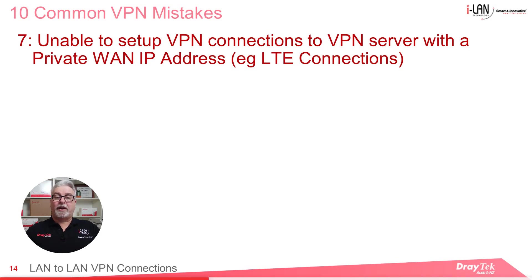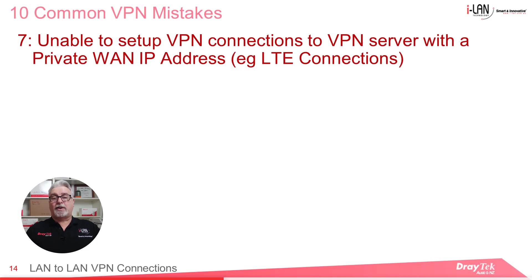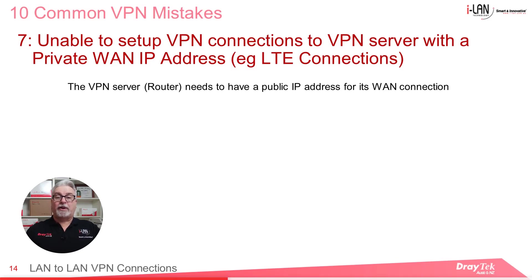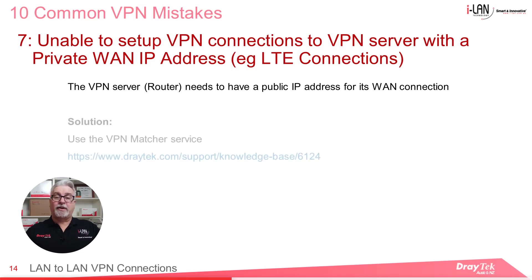Another common issue is that VPN connections cannot be made to a VPN server which has a private WAN IP address. This can be the case when using 3G or 4G LTE connections to the router. LTE ISPs will usually allocate a private IP address for this type of connection. Private IP addresses are not routable over the internet, so the VPN client will not be able to find a path to the server. While VPN clients with a private IP address will be able to make an outgoing VPN connection, the VPN server or router will need to have a public IP address for its WAN connection. Some ISPs will provide a public IP address on request, but another solution is to use the VPN Matcher service developed by Draytech. Links to more information about VPN Matcher are in the description below.